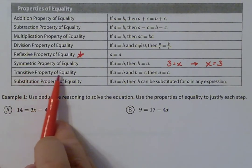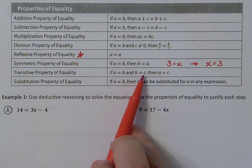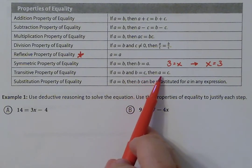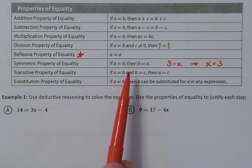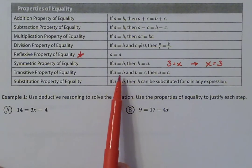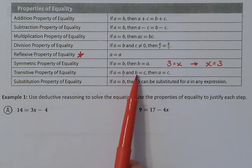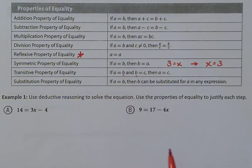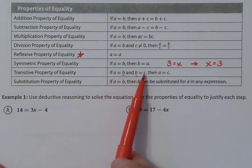The transitive property of equality states that if A equals B and B equals C, then A equals C. I like to think of it as getting rid of the middleman — A equals B and B equals C share B, so you can cancel those out and jump to saying A equals C directly.